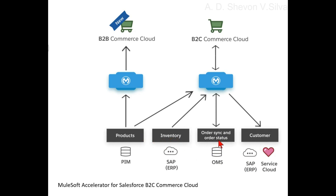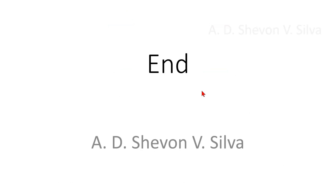On the customer side, you can see SAP ERP and Service Cloud. Products, inventory, order sync, order status, and customer data are all connected to MuleSoft, which interacts with B2C Commerce Cloud handling order sync and order status.